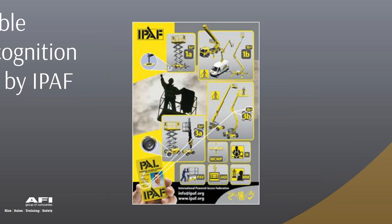'3B' again means a machine can be driven whilst elevated, but the central projection of the platform at maximum inclination may be outside the tipping line — it can project beyond the confines of the chassis. This identifies it as a boom type platform. For 1A and 1B, 'A' and 'B' definitions are the same, but the '1' means the machine is static in operation — the superstructure will not lift until the base has been stabilized.